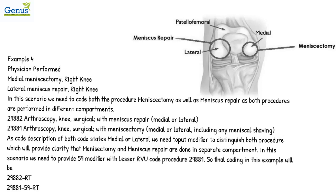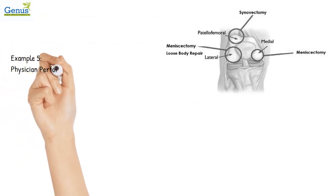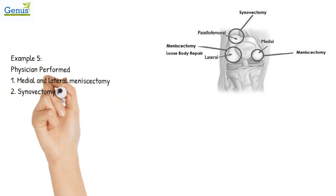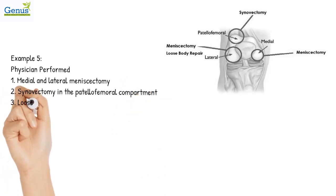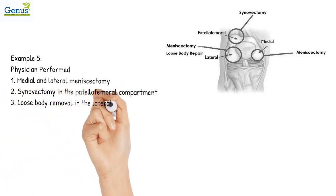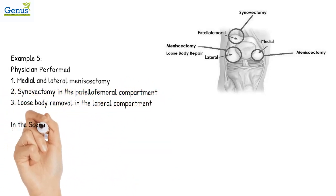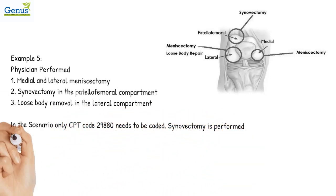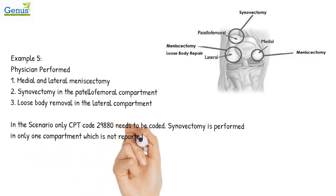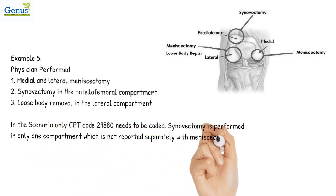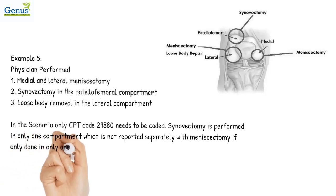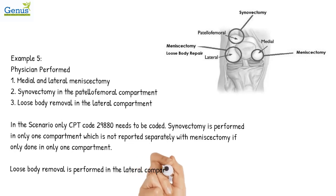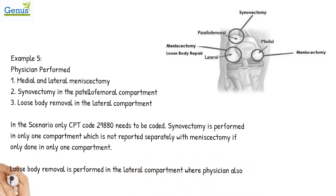Example 5: A physician performed medial and lateral meniscectomy, synovectomy in the patellofemoral compartment, and loose body removal in the lateral compartment. In this scenario, only CPT code 29880 needs to be coded. Synovectomy was performed in only one compartment, which is not reported separately with meniscectomy when done in only one compartment. The loose body removal was performed in the lateral compartment where the physician also performed meniscectomy, so HCPCS code G0289 for loose body removal will not be coded separately.